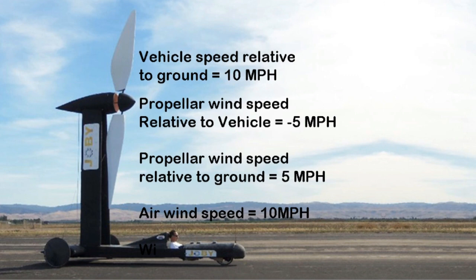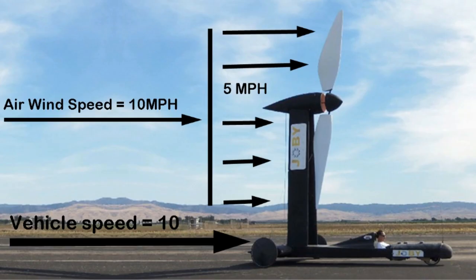If you want another visualization, consider the relative speeds of the different things in play here. The vehicle is going 10 miles an hour, relatively to the ground. The propeller wind speed relative to the vehicle is going backwards at 5 miles an hour. That means the propeller wind speed relative to the ground is going 5 miles an hour. The vehicle is going 10 miles an hour, but the air behind the propeller is only going 5 miles an hour relative to the ground. And the air wind speed is 10 miles an hour. So we can visualize this as follows. The car is going 10 miles an hour, but the wind behind the propeller is only going 5 miles an hour. So you can think of this as a wall of air, which is only going 5 miles an hour. But the air wind speed is 10 miles an hour. So this 10 mile an hour wind speed is pushing this wall of air, which is 5 miles an hour, and pushing it forward. And that is how the vehicle is able to accelerate.